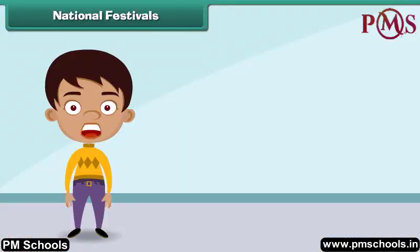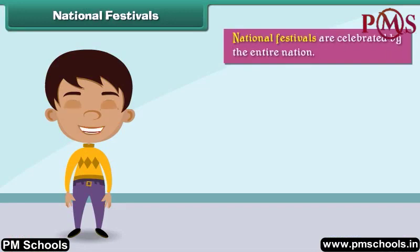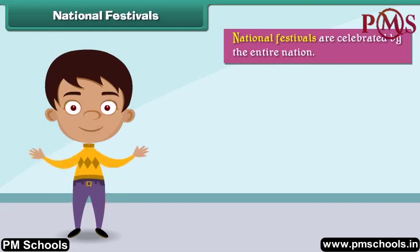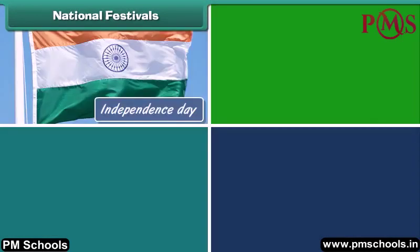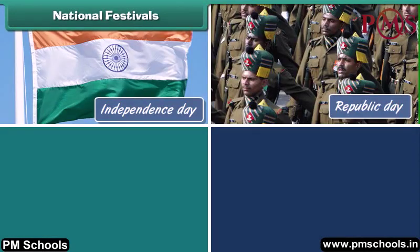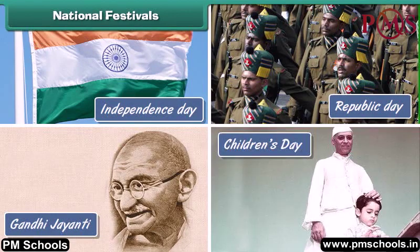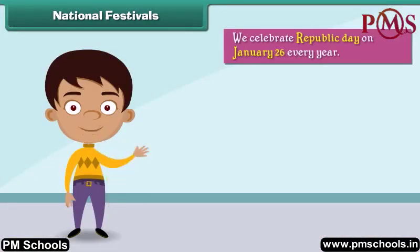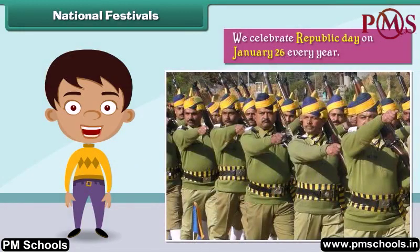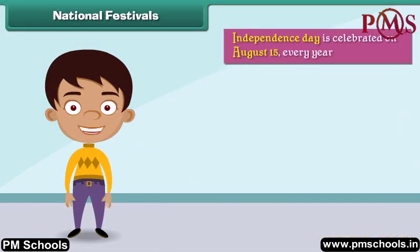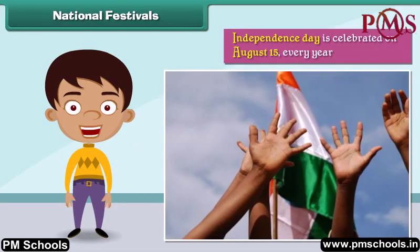National festivals are celebrated by the entire nation. Some important national festivals celebrated with great enthusiasm in India are Independence Day, Republic Day, Gandhi Jayanti, and Children's Day. We celebrate Republic Day on January 26 every year — on this day the Constitution of India came into force. Independence Day is celebrated on August 15 every year, the day India got freedom from the British.